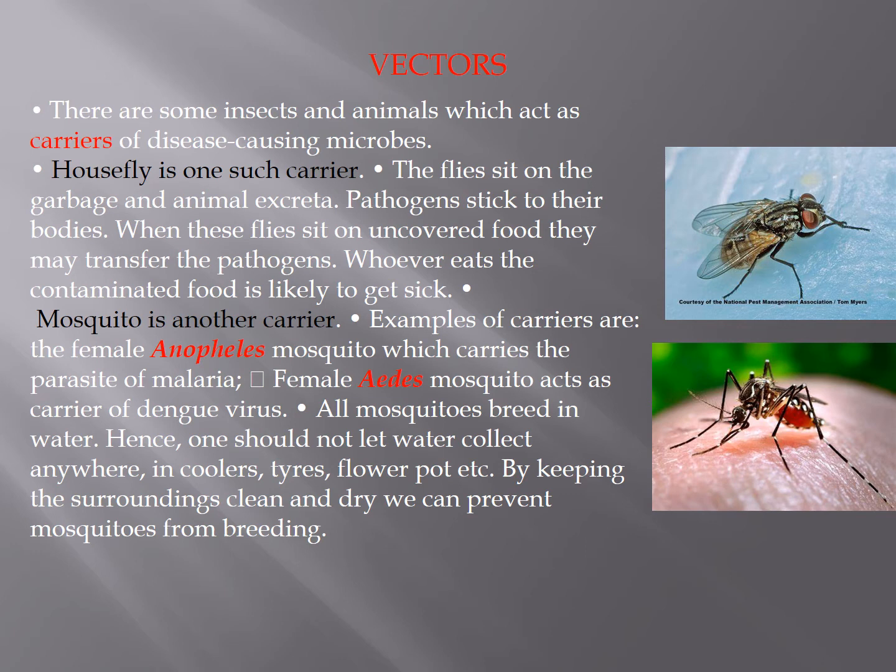Another example is the mosquito. The female Anopheles mosquito carries the parasite of malaria. Sometimes we mistakenly say that malaria is caused by the mosquito, but actually the mosquito is not the causative agent of malaria. The causative agent is a protozoa, namely Plasmodium. The function of the mosquito is to carry Plasmodium from an infected person to a healthy person, thus helping in spreading the disease.